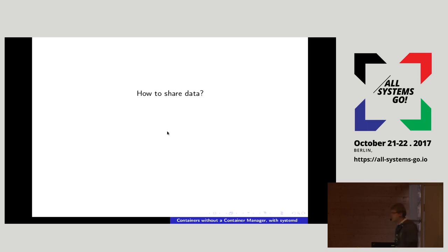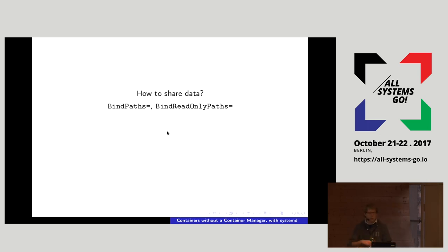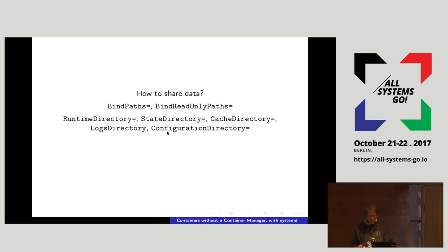The other problem is how to share data. On Unix, there are bind mounts for that. Traditionally with chroot you'd establish bind mounts on the host, so they'd always show up in the host mount table. In systemd unit files you can use BindPath and BindReadOnlyPath, which allow you to map anything from the host into the chroot environment. These only show up in the mount table of the service itself, so they don't pollute the host. You just specify either one path or a path-to-path mapping.